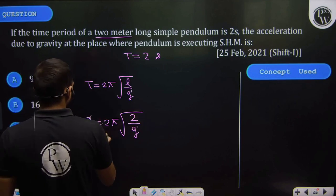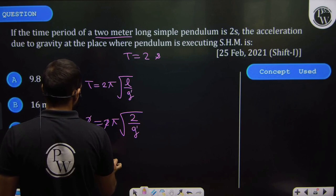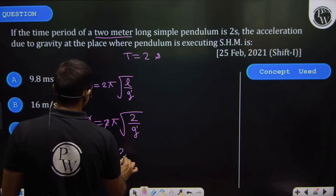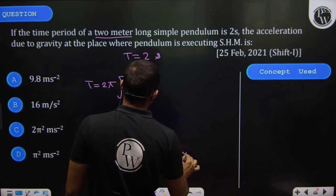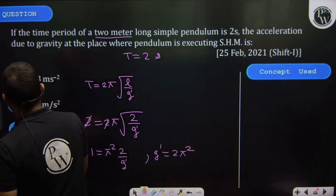So two to two cancel out. One is equal to π² times two divided by G dash. So G dash is 2π². So this will be the correct answer.